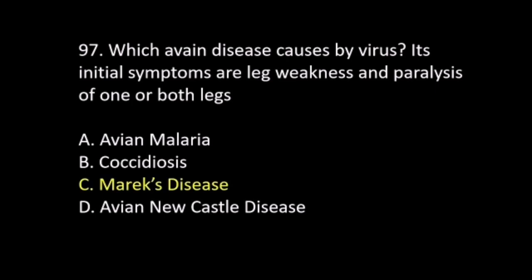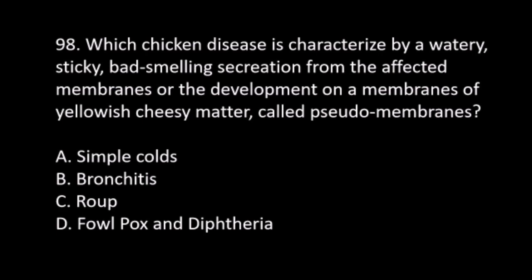Number 98. Which chicken disease is characterized by a watery, sticky, bad-smelling secretion from the affected membranes, or the development of yellowish cheesy matter called pseudomembranes? A. Simple colds. B. Bronchitis. C. Roup. D. Fowl pox and diphtheria. The answer is C. Roup.